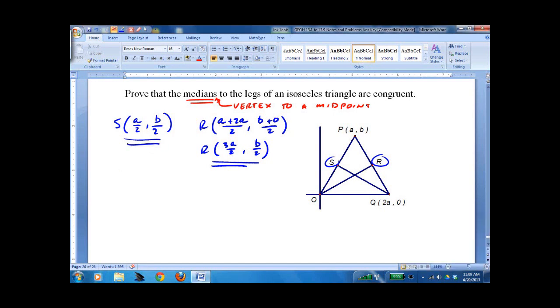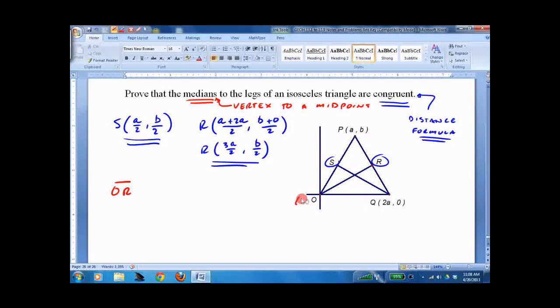Now it says prove the legs are congruent. So that screams distance formula to me. And it's tricky. So let's see what we got here. Let's do O to R first. Only because the coordinates of the origin are 0, 0. So it makes it a little bit easier.